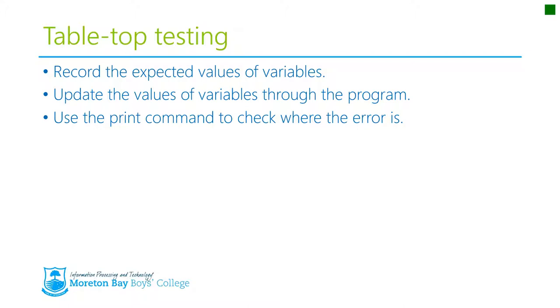And then finally you use the print command to check where the error is. So if you get to the end of your actual testing and the variables that actually are produced are not the variables that your tabletop testing said should be produced then you need to insert print commands throughout the actual program to identify where exactly the error is occurring and where those variables are not changing in the way that you anticipated.